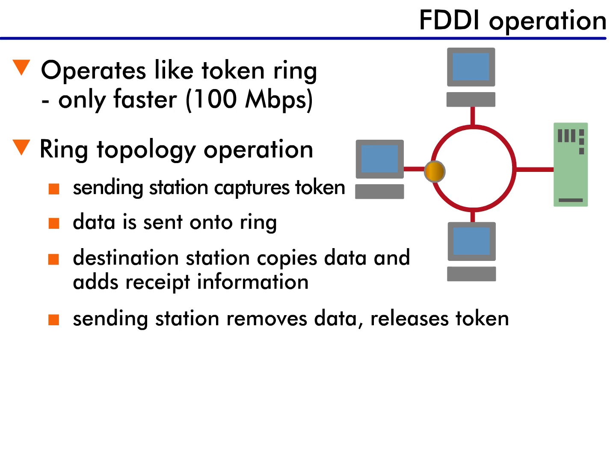Because FDDI operates similar to a faster version of Token Ring. First, you have an operational ring with a token rotating around it.